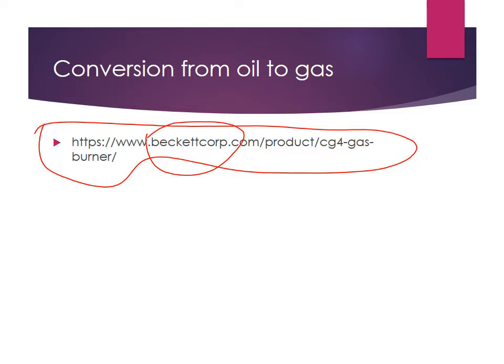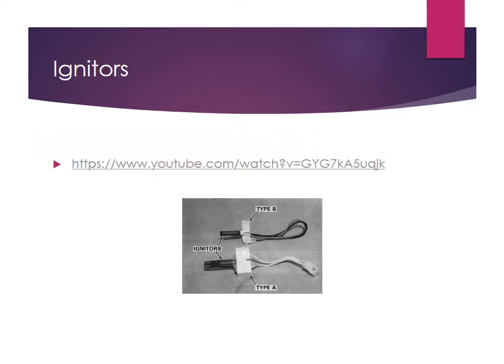Igniters for oil are different than for gas. Before, we had to atomize oil into small droplets; now we have gas, which is very easy to ignite — it doesn't take much, just a very small spark. There are two types of igniters: some produce a spark and some are a heated glow stick, called a glow igniter. This is a heater that gets very hot, glows, and will ignite the gas. Gas ignites at a lower temperature than oil, and since it's in gaseous form it's easy to ignite.